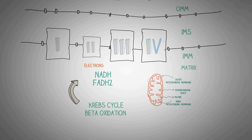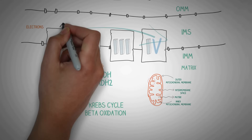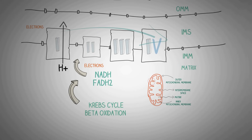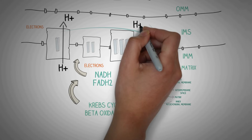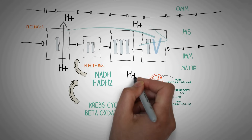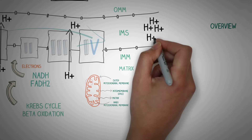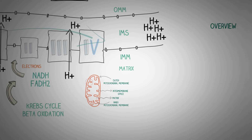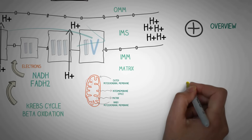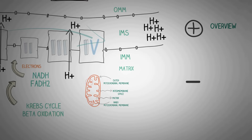The electrons then travel from the first to the fourth enzyme complex, and in this movement energy is generated. This energy is utilized in pumping hydrogen ions into the intermembrane space from the matrix of the mitochondria. This continuous pumping causes the generation of a higher concentration of hydrogen ions in the intermembrane space compared to the matrix, generating a positive charge in the intermembrane space and a negative charge in the matrix.